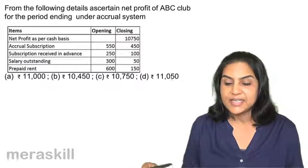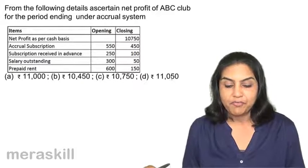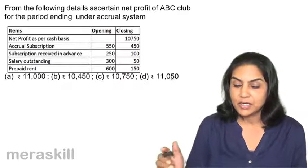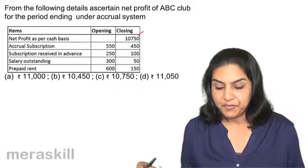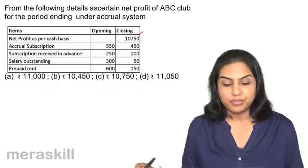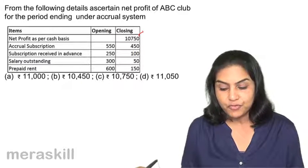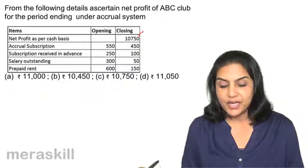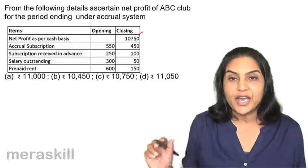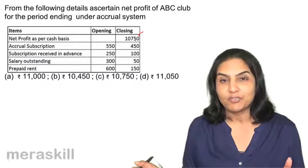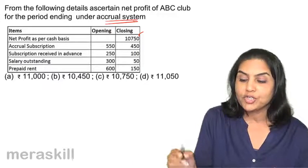From the following details, ascertain the net profit of ABC Club for the period ending under the accrual system. Net profit as per cash basis is $10,750. Accrual subscription opening is $550 and closing is $450 — subscription which is outstanding, earned but not received. Subscription received in advance is $250 opening and $100 closing. Salary outstanding is $350. Rent prepaid is $600 opening and $150 closing.